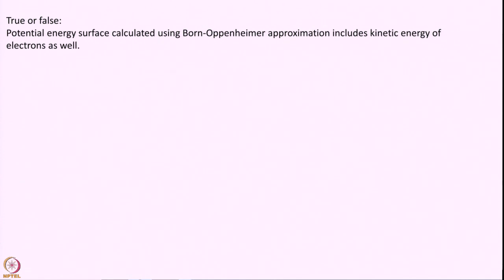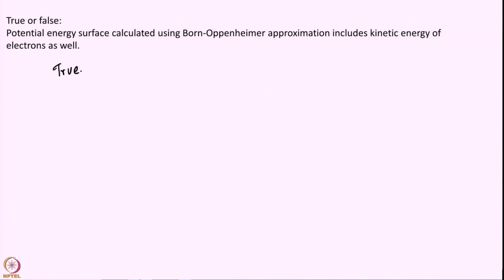True or false? Potential energy surface calculated using BO approximation includes kinetic energy of electrons as well. Take your time and answer your question true or false. Remember, Born-Oppenheimer surface that is an eigenfunction of H electronic which is kinetic energy of electrons plus the potential energy of electrons comma nuclei, and we solve H electronic psi i equal to E i psi i and E i is your potential energy surface. So this E i actually has the contribution from kinetic energy of electrons.